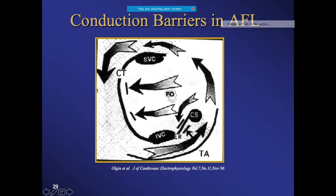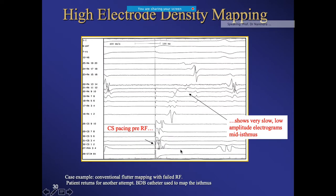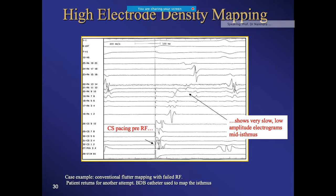Conduction continues through the circuit, but there is a small area of slow conduction where you can create the ablation line. The key question is how to identify that area - which zone you are going to target - and we need to recognize those areas of slow conduction.